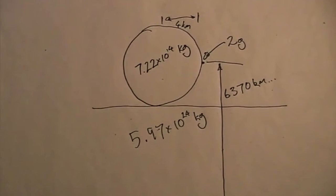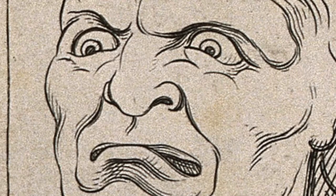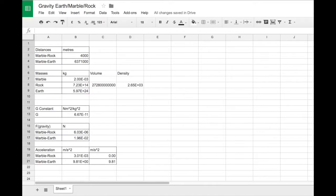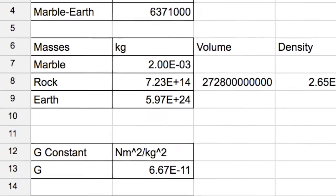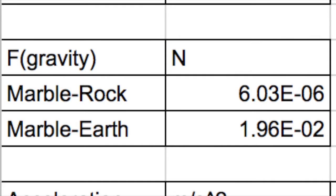At this point, working things out with pencil and paper makes me terribly irritable. So remember, spreadsheets are your friend. Putting these numbers into Newton's gravitational equation, we get the force due to gravity. Between the marble and the Earth, it is 1.96 by 10 to the minus 2 Newtons. The force between the marble and the rock is 6.03 by 10 to the minus 6 Newtons.